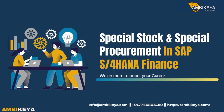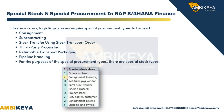I am going to explain about special stock and special procurement in SAP S/4HANA Finance. In some cases, logistic processes require special procurement types to be used: consignment, subcontracting, stock transfer using stock transport order, and third-party processing.